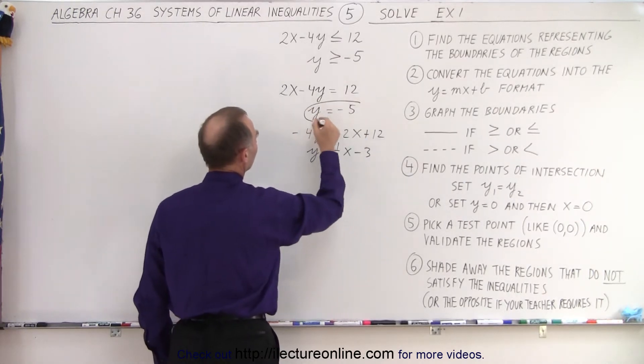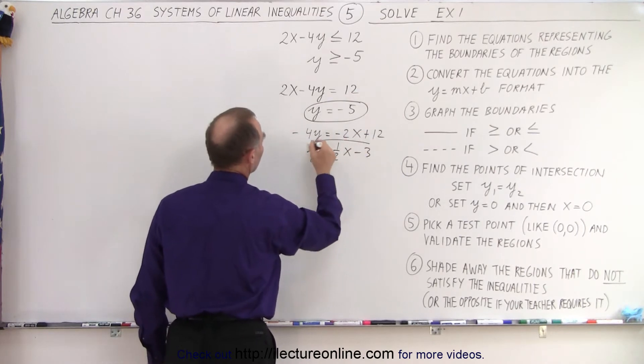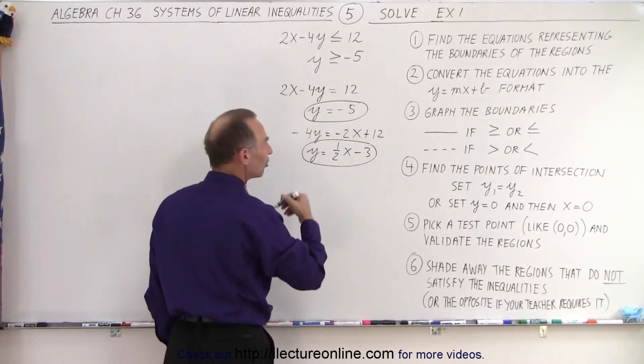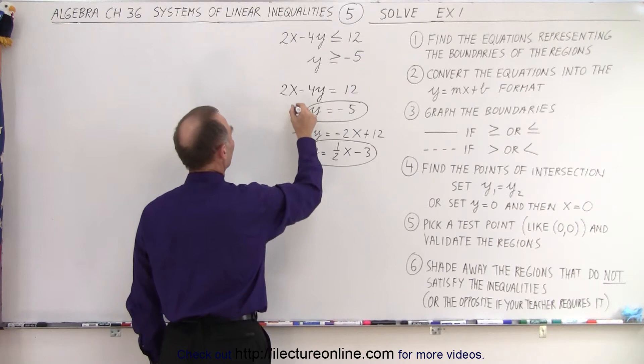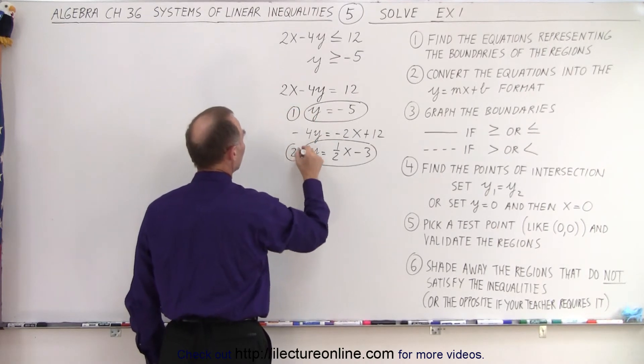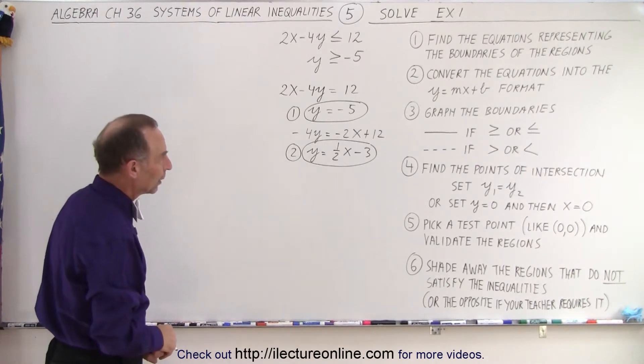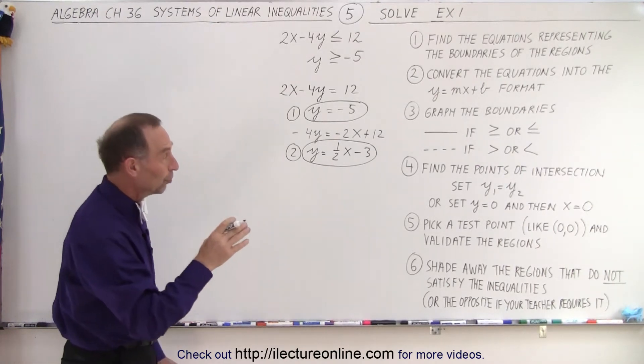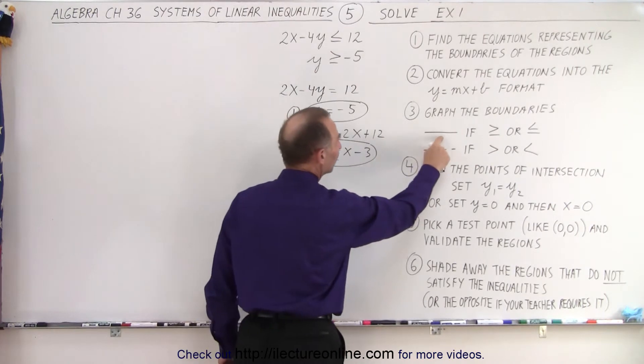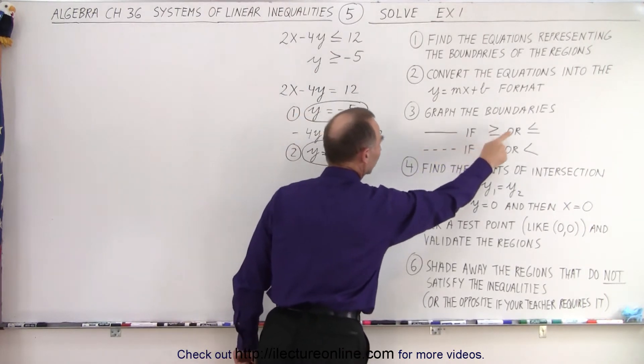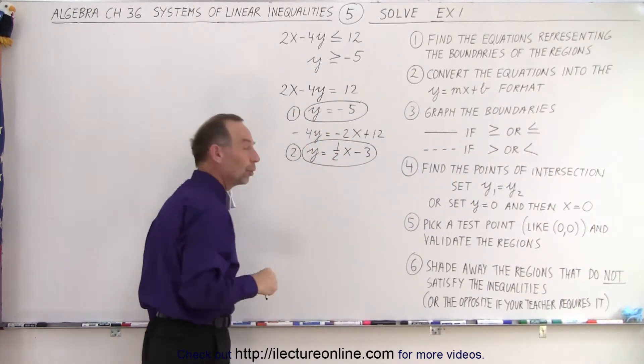So now we have our two equations. Here's equation 1, here's equation 2, and we should label them. So let's call this equation number 1, let's call this equation number 2. So when we graph them, we know which one we're talking about. We're now going to graph it, and notice the boundaries will be solid if we have an equal sign or less than or equal sign, which is the case in both of these.